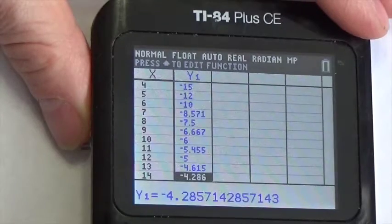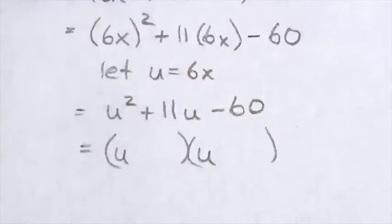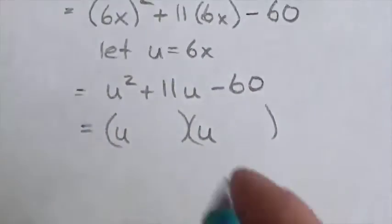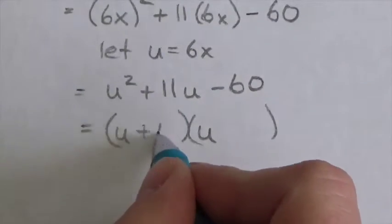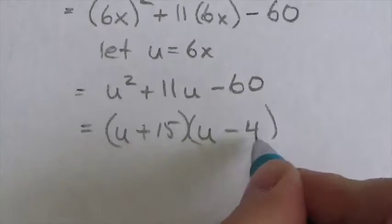So I'm thinking that that's got to be, yeah, there it is, 15 and negative 4. So when I come back here, this should be positive 15, negative 4.